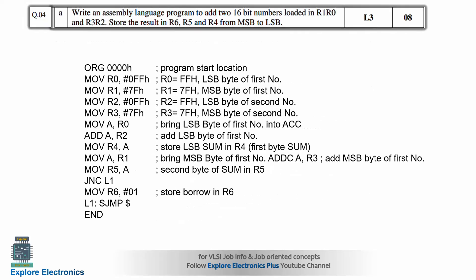Then we have one more assembly language program question: write an ALP to add two 16-bit numbers loaded in R1, R0 and R3, R2, and store the result in R6, R5, R4 from MSB to LSB. Two 16-bit numbers each take two registers — R1, R0 for the first 16-bit number and R3, R2 for the second. You need to add them and store the result in R6, R5, and R4. The program is given with comments added for better understanding.